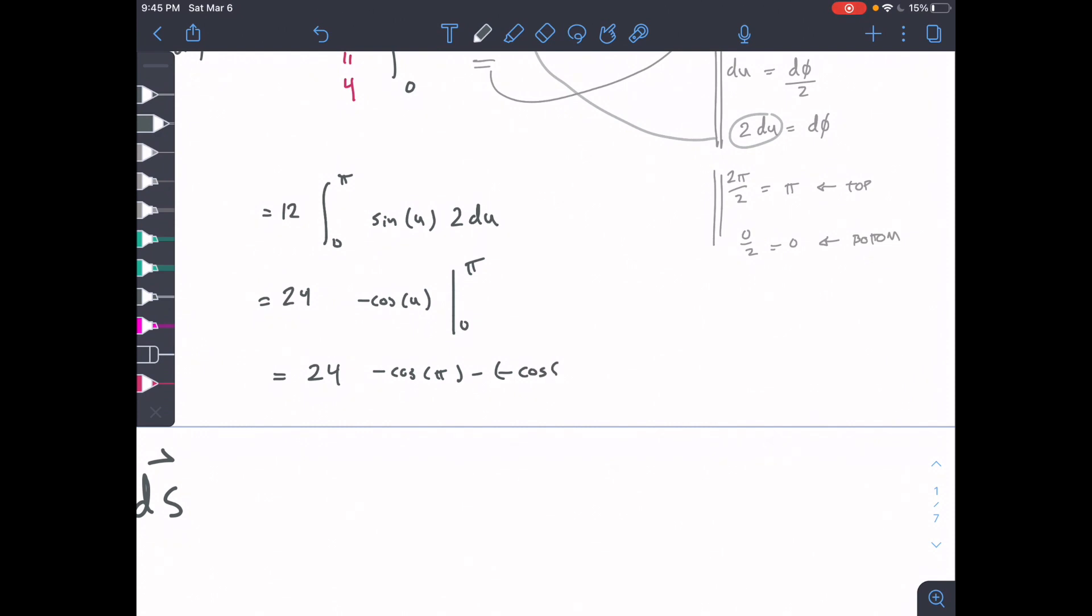Cosine of pi is equal to negative 1, and cosine of 0 is equal to 1. So it's going to turn into 24 times 1 plus 1, which is equal to 2. So we're going to have 48.